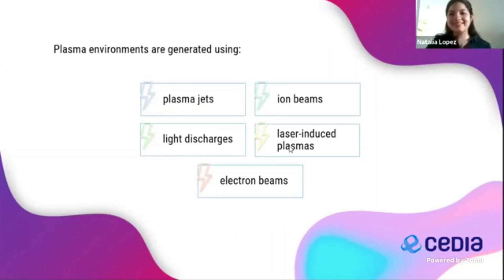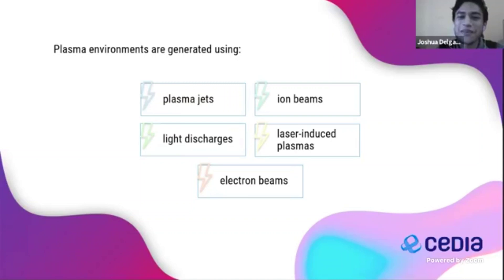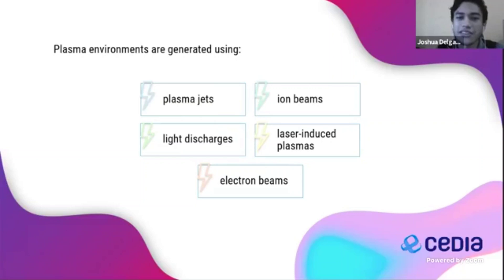Plasma polymerization refers to the process of depositing a thin surface layer on a substrate. It occurs at high speed in the gas phase. Plasma is formed by ionizing a monomer that flows through an electrical discharge. Plasma environments are generated using plasma jets, ion beams, glow discharge, corona discharge, laser-induced plasma, and electron beams.